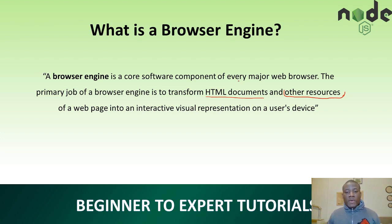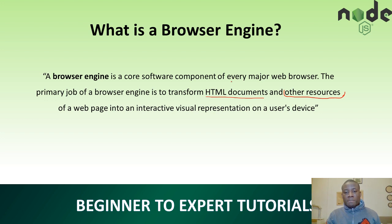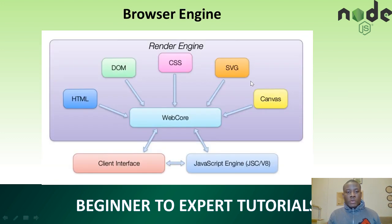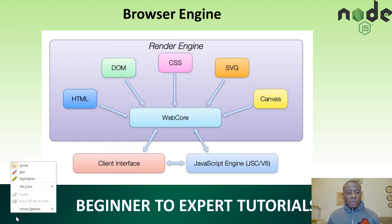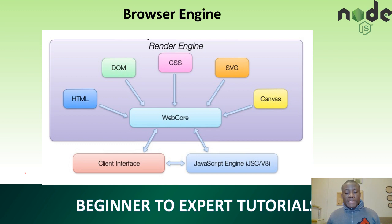We know about the Java Virtual Machine that converts Java programming to bytecode, which is then converted to machine language using another intermediate tool. But that is not exactly what we are talking about here. Using a diagram to illustrate: we are talking about the browser engine, and we will now see where the V8 comes in. The browser engine takes different components of a web page — HTML, DOM, SVG, Canvas, and a whole lot of things.